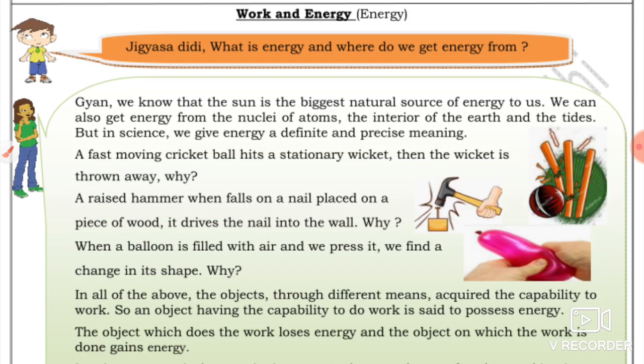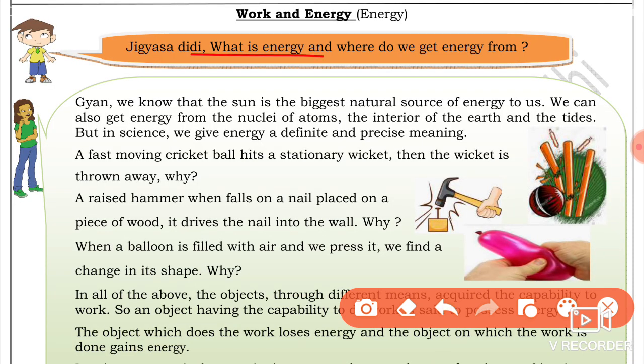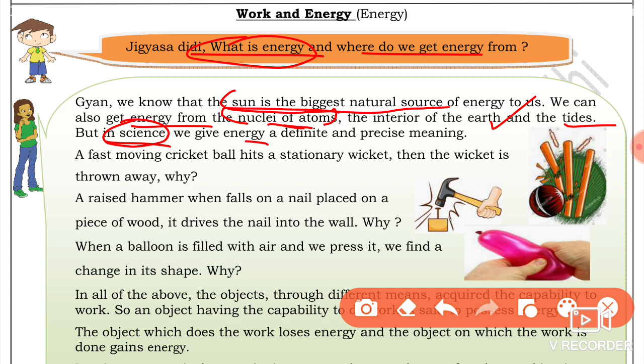What is energy? Where is energy? We know the sun is the biggest natural source of energy. We get energy from the atoms, from the interior part of the Earth. But in science, we give energy a defined and precise meaning.